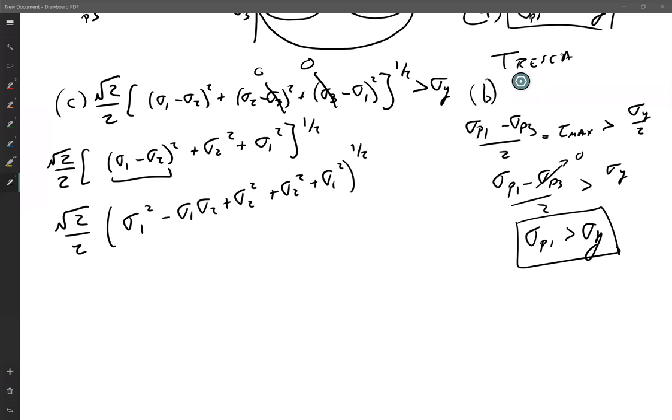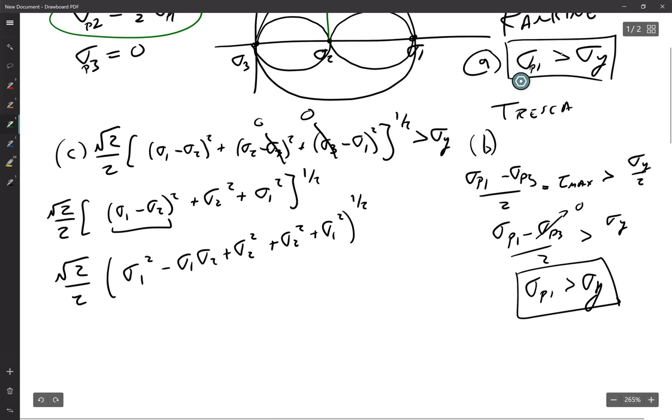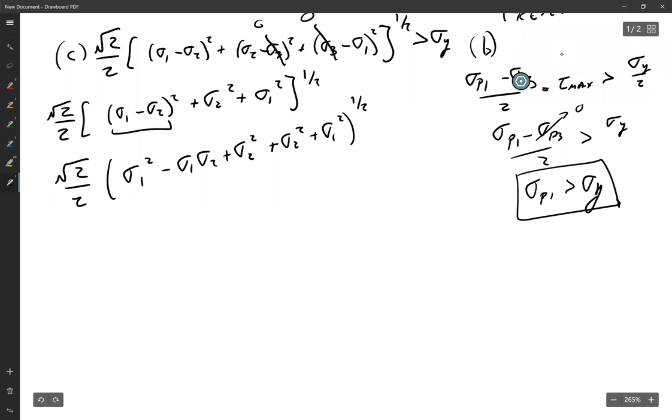Okay, so far so good, and then we can go back up here and recognize that we've got a relationship between p1 and p2 that we can apply. So this allows us to write square root of 2 over 2, sigma p1 squared minus sigma p1 one half sigma p1 plus one half sigma p1 squared plus sigma